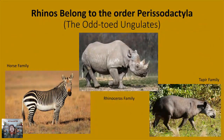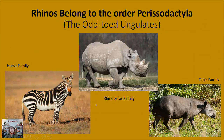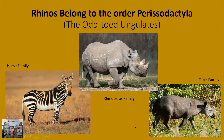Rhinoceroses belong to the greater taxonomic order called Perissodactyla, also known as the odd-toed ungulates. It's a pretty small order — it includes just a couple species of horses including the zebra, the five species of living rhinos, as well as a couple species of tapirs.